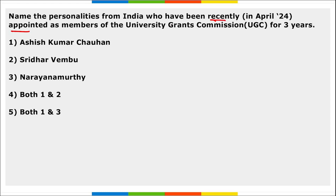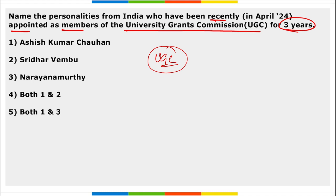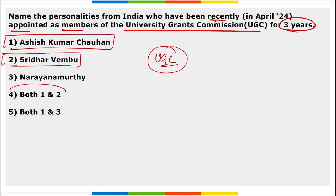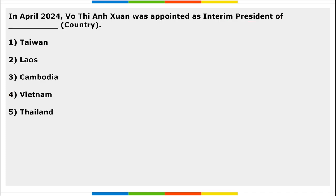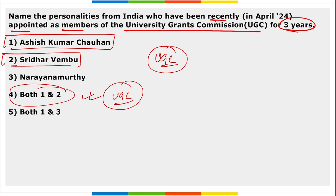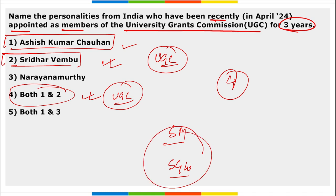Next: name the personalities from India recently appointed as members of the University Grants Commission (UGC) for three years. They are Ashish Kumar Chauhan and Shridhar Vembu — both appointed as members of UGC for a period of three years. Apart from this, two more members were also appointed: retired Professor Sachidananda Mohanty, former Vice Chancellor of the University of Odisha, and Professor Shashikala Gulab Rao Vanjari. So a total of four members were appointed to UGC for a period of three years.